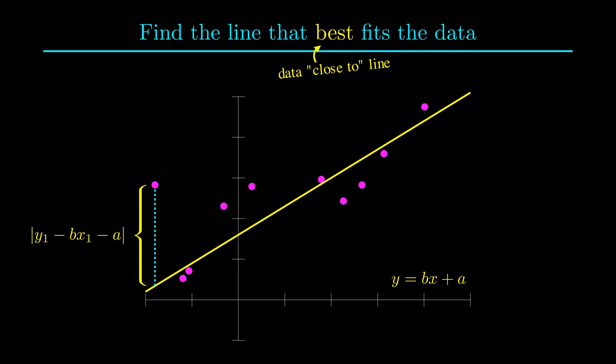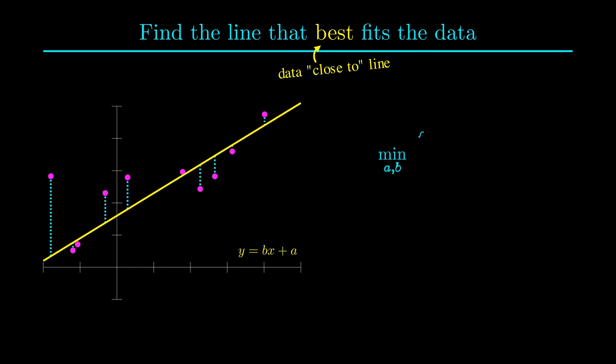We can likewise find the distance or error for all of the points in our data. Since these distances represent error, it makes sense to find a line that minimizes the sum of all of these distances. If we minimize this objective, the line we get is called a least absolute deviation line.